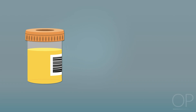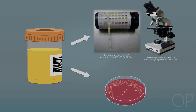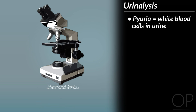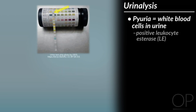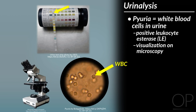Diagnosis is made by obtaining a urine specimen and performing urinalysis and urine culture. On urinalysis, one looks for pyuria and bacteriuria. Pyuria refers to the presence of white blood cells in the urine. This is shown on urinalysis either by positive leukocyte esterase, an enzyme that is released by white blood cells, or by visualizing white blood cells on microscopy.